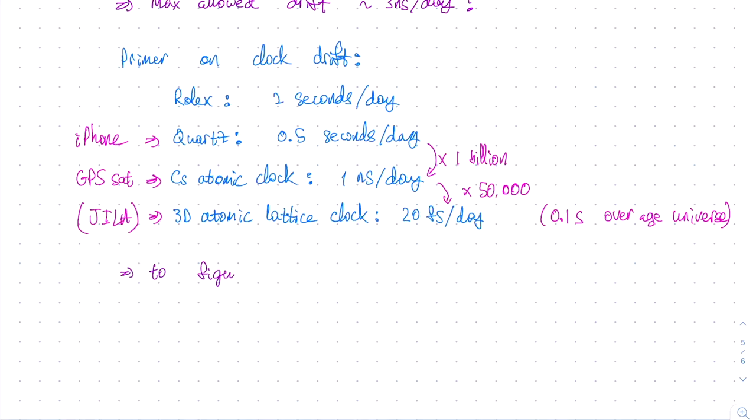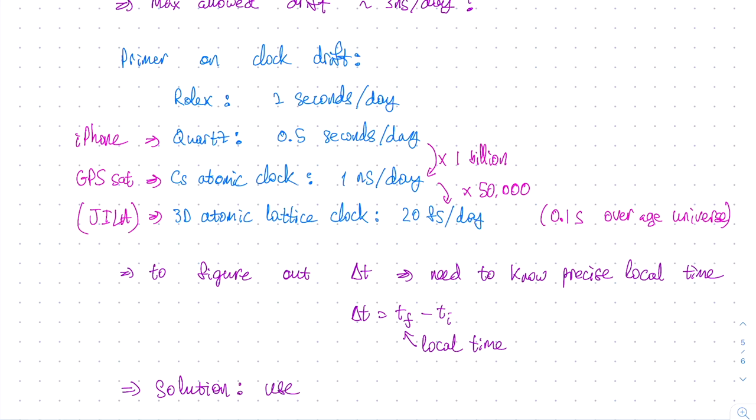Now coming back to the GPS system. In order to figure out our position, we need to figure out delta t. And to do that, we need to know the precise local time, so that we can go ahead and find delta t by subtracting the initial time from the final time. Now while the initial time is obtained from a caesium atomic clock, how do we precisely obtain the final time tf, for which we only have a local clock in our GPS receiver?